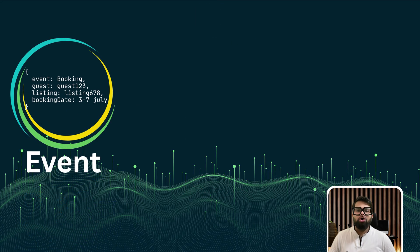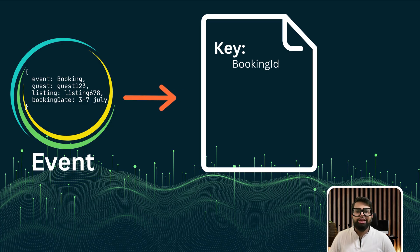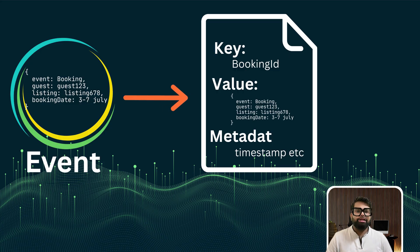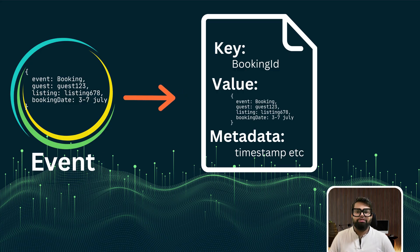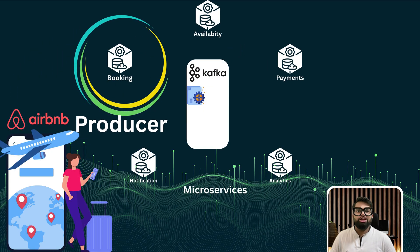That message is called an event. It has a simple structure: a key — for example, a guest ID or booking ID; a value — the payload of actual data; and some metadata like a timestamp, versioning, and so on. The booking service that creates and sends events to Kafka is known as a producer. It produces events.